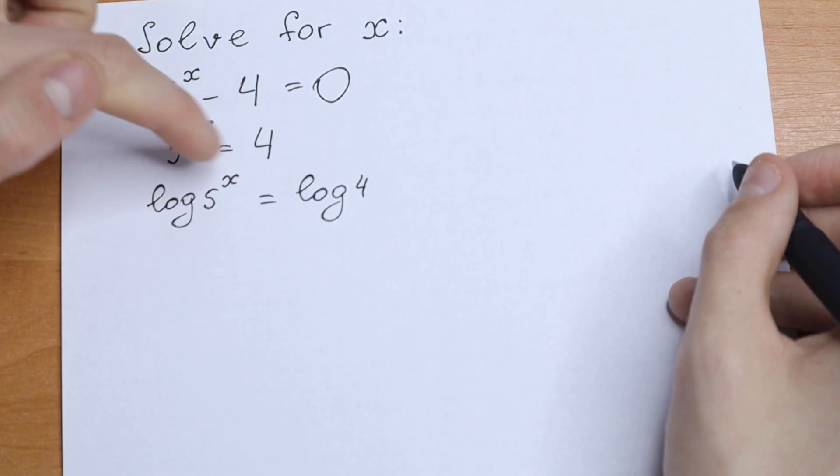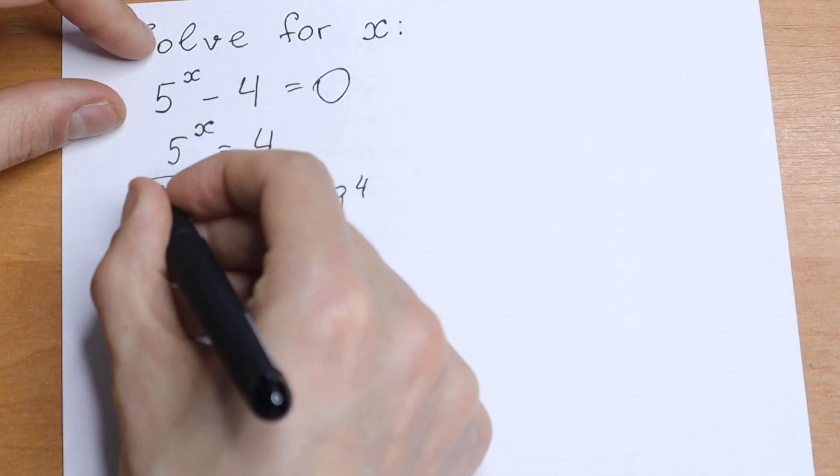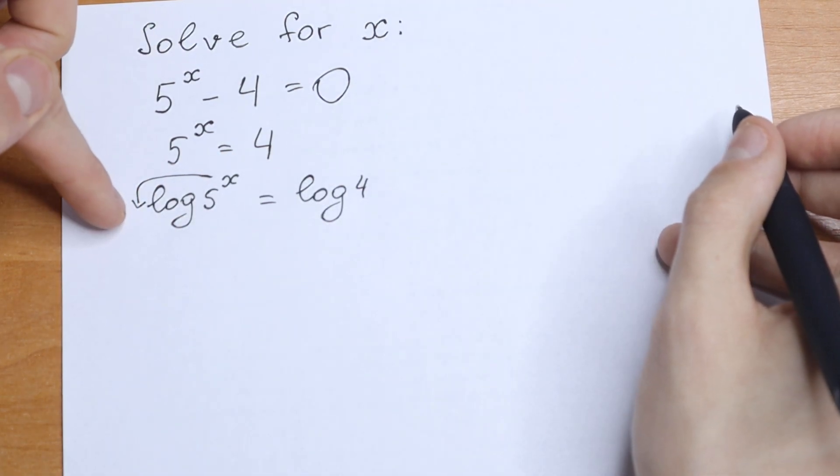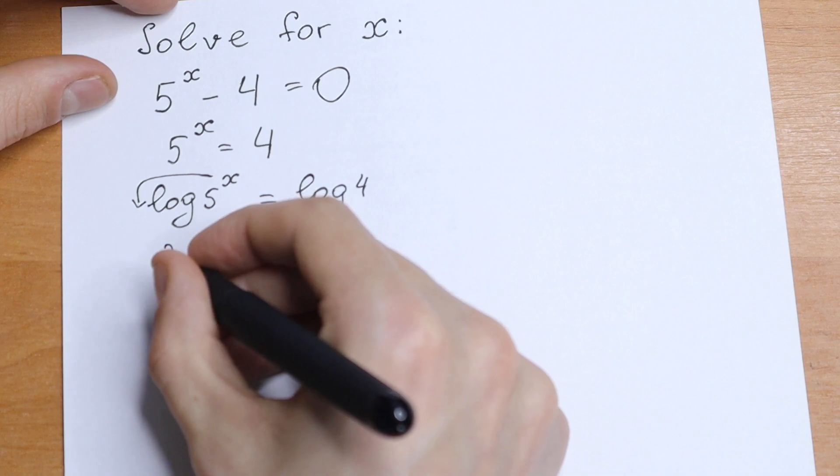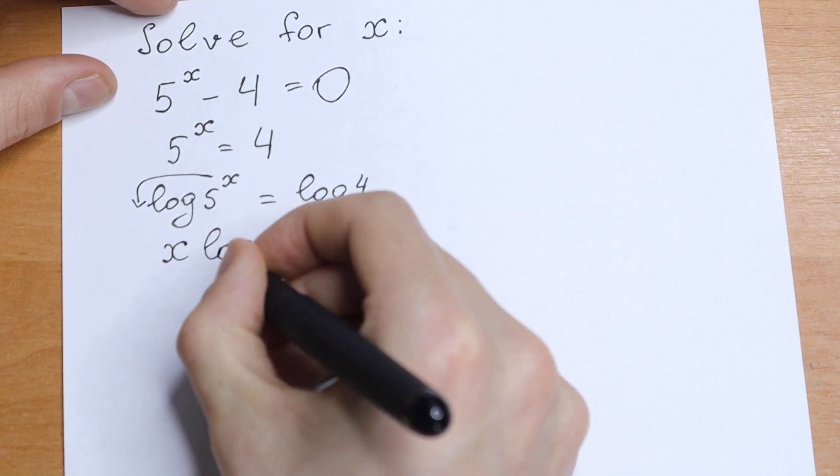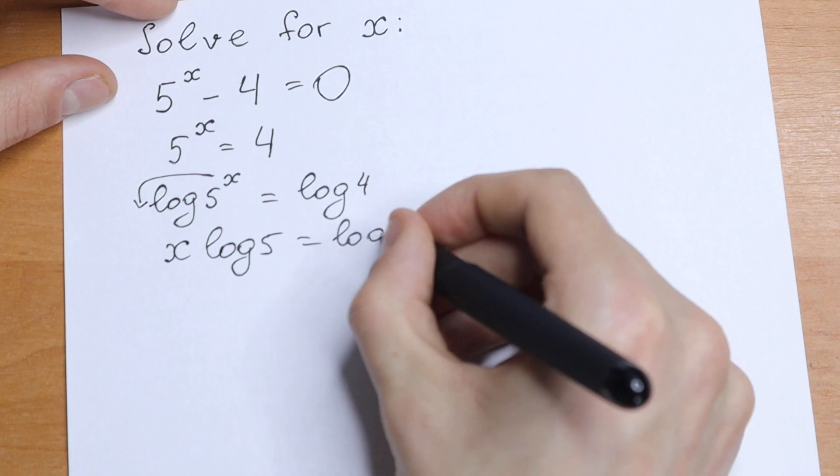And take a look, this x jumps right here because of the log property. So what will we have? We will have x log 5 equal to log 4.